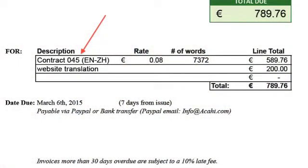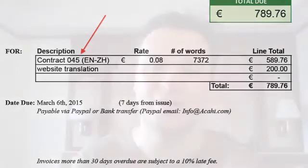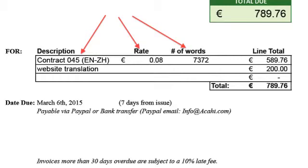Then you go down to the description. This is taken from the name of the job — you'll use either their reference number to make their life easier, or just the name of the file you have to translate, or anything like that, just so it's recognizable. If your job is based on a number of words and a rate per word, you can put that in there since it makes life easier — you have the rate, the number of words, and the total at the end.